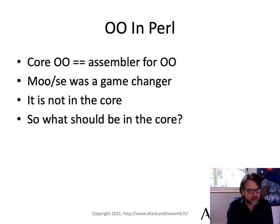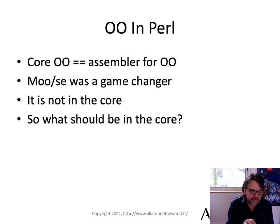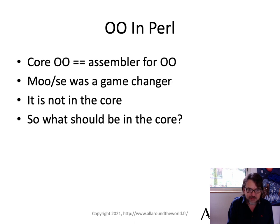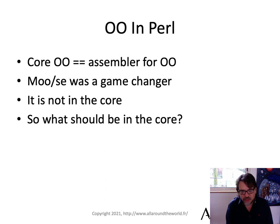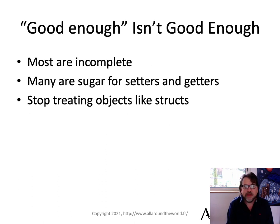It turns out we've got something kind of similar with Moose and Moo — they changed everything. They dominated the OO field in Perl because they were so powerful and so good, but they're not in core. And so that's the question: what should be in core? That's what I want to address right now.